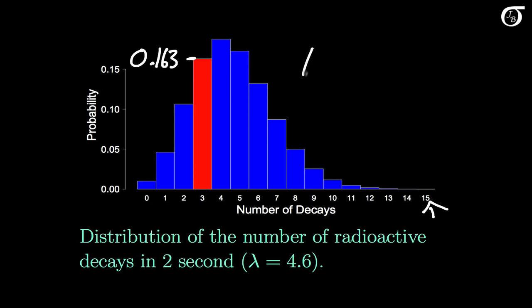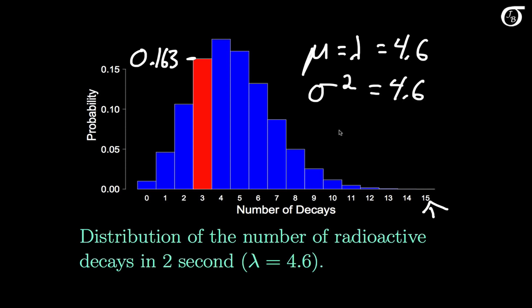For this distribution, the mean mu equals lambda, which is 4.6 here. The variance is also equal to lambda, so that's also 4.6. If we wanted the standard deviation sigma, we'd take the square root of 4.6. Looking closely, there is a hint of right skewness in this distribution. The Poisson distribution has some right skewness, but it depends on the value of lambda. When lambda is large, the distribution will be close to symmetric, but when lambda is close to 0, the right skewness can be pretty strong.